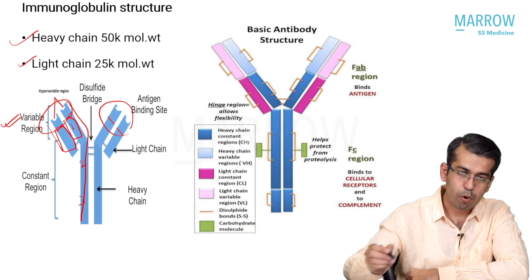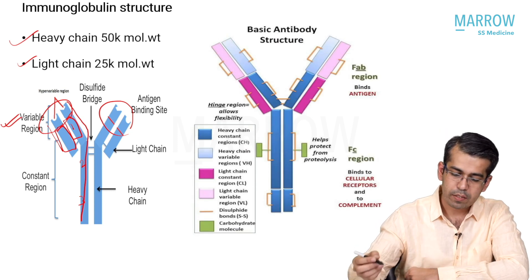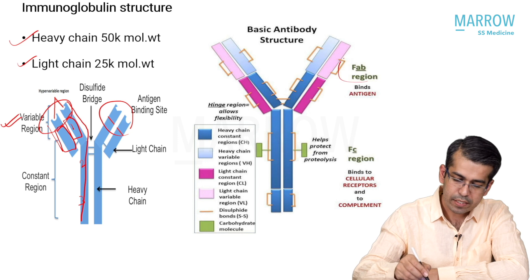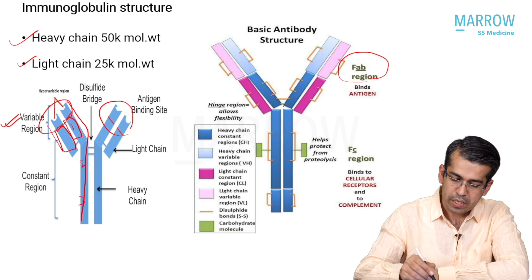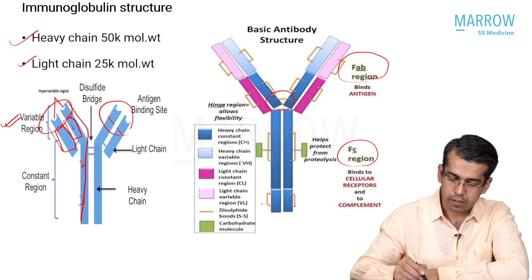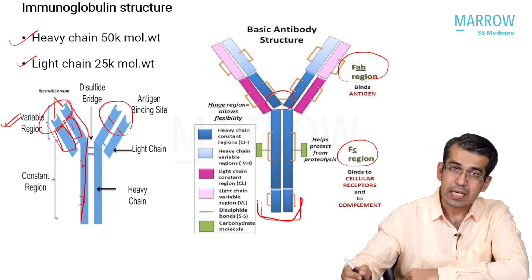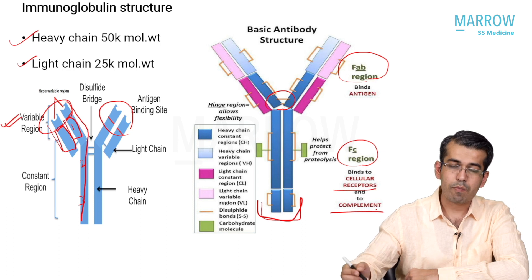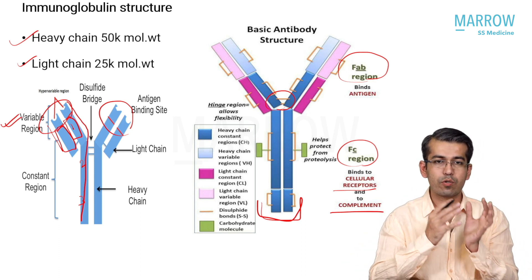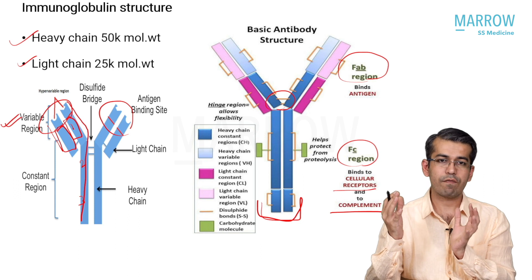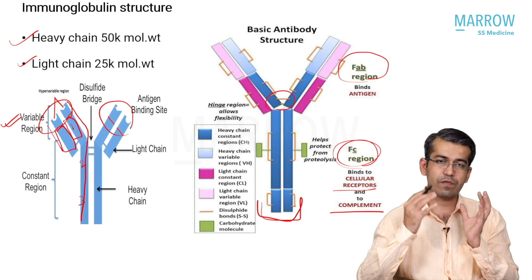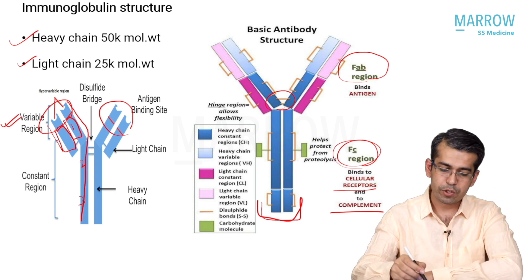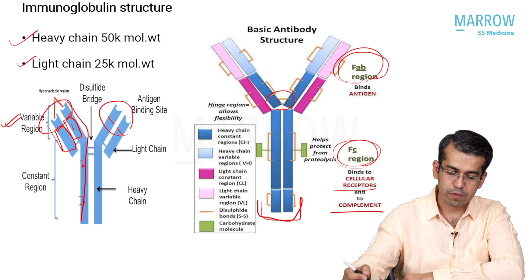The variable region is critical for antigen binding. The antigen-binding region is called the Fab region. In between there is a hinge region that allows flexibility. The constant portion - the Fc region - binds to cellular receptors and complement. An antibody binds to a cell surface receptor via the Fc region, but binds to a specific antigen via the antigen-binding portion in the variable region.